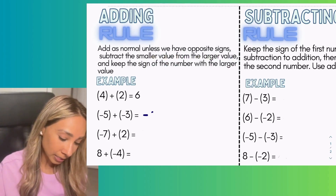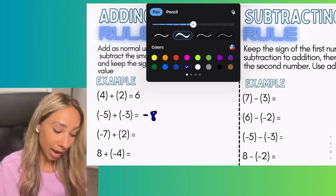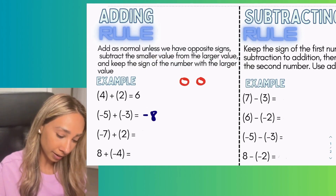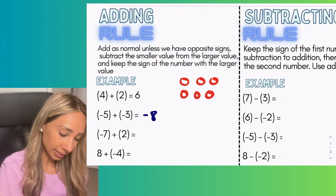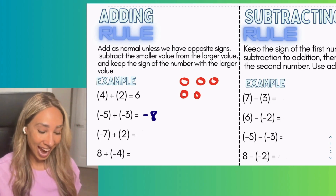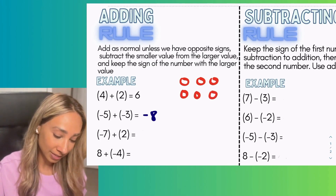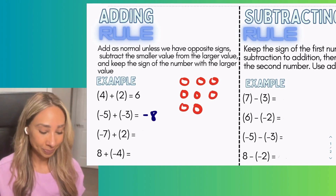Another way to explain this is using algebra tiles. If I have five negative tiles and then add three more negative tiles, that's still going to leave me with negative eight.